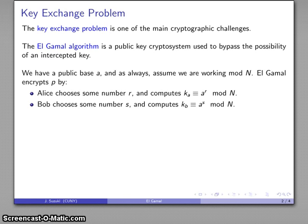And Bob is going to choose some number s, and he's going to compute the public base raised to his exponent, again, reduced mod N. So these values Ka and Kb are out in public, and they're communicated, and they're exchanged between each other.